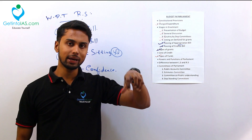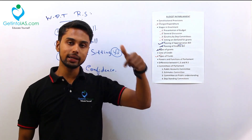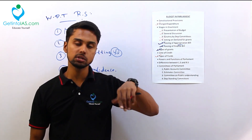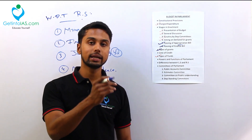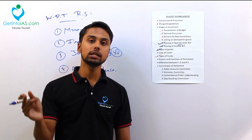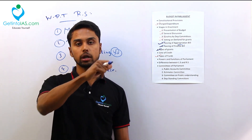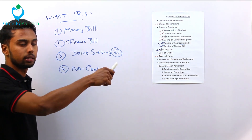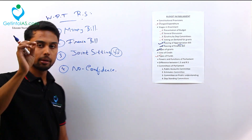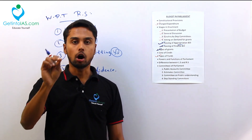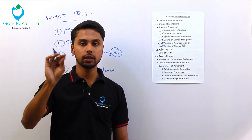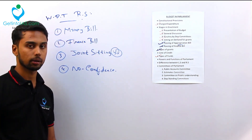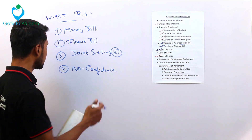The reason no confidence motion belongs only to Lok Sabha is that Lok Sabha is directly elected — the people of India elect members to Lok Sabha. In the case of Rajya Sabha, it is not a direct election. We do not stand in queues to vote for Rajya Sabha members. Rajya Sabha is an indirect body — the MLAs we elect are the ones who elect members to Rajya Sabha. Since members of parliament are only responsible to Lok Sabha, the no confidence motion privilege is not given to Rajya Sabha.